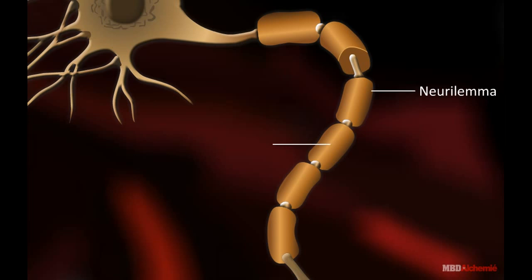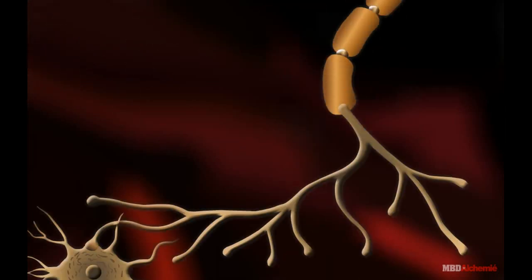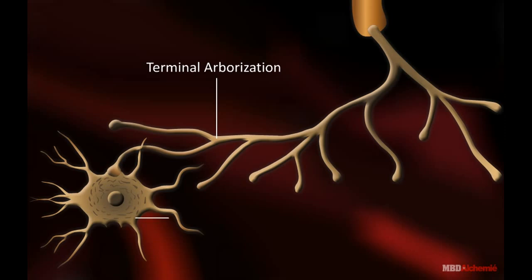The axon is covered by medullary sheath and possesses node of Ranvier. It may form a number of terminal arborizations.